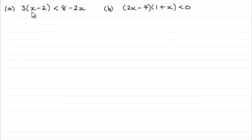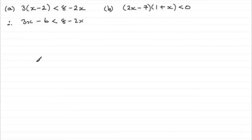What we need to do is expand this first of all, so therefore what we've got is 3 times x — 3x — and then 3 times minus 2 is minus 6, is less than 8 minus 2x. Now we need to add 2x to both sides, so 3x and 2x gives us 5x, and then we've got minus 6 — we can add that to both sides — and that will give us 8 and 6 is 14.